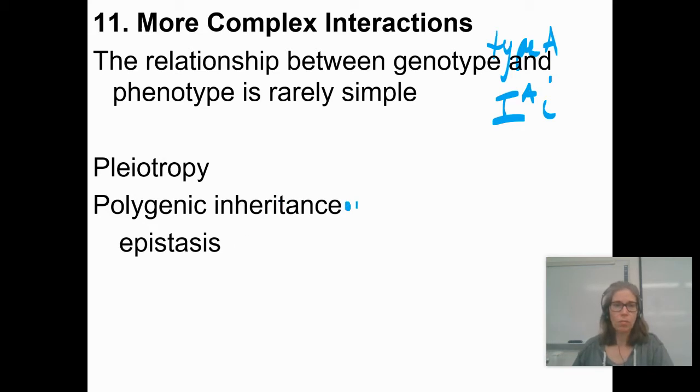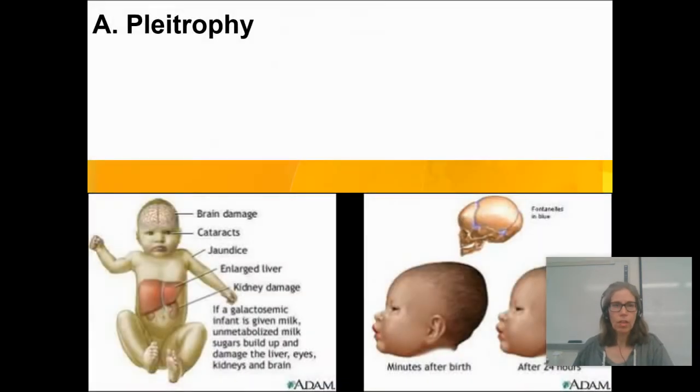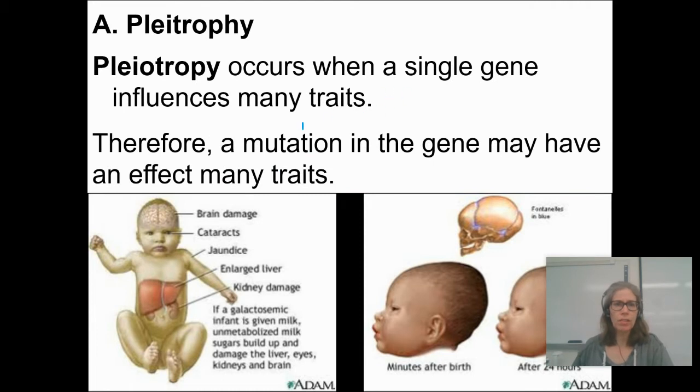Polygenic inheritance is one thing that we've talked about a little bit already. Epistasis is an example of polygenic inheritance. So let's start by talking about pleiotropy. Pleiotropy occurs when a single gene influences many traits, so a mutation in that gene can have many different effects.